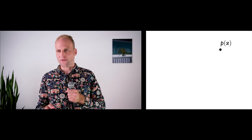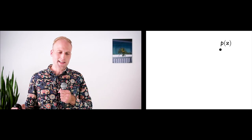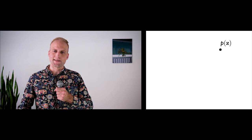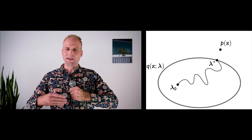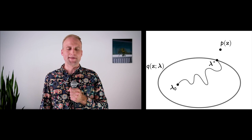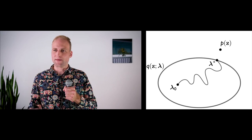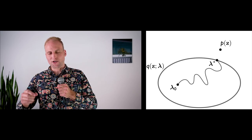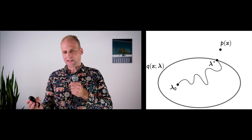How does variational inference work? Imagine the space of all probability distributions. Somewhere in this space is the model p of z we wish to study. Because this model is intractable, we define an approximate family of distributions q of z — a variational family that is simpler and allows us to make computations. We then vary the parameters lambda to find an approximation that gets closer and closer to p of z while remaining computationally tractable.